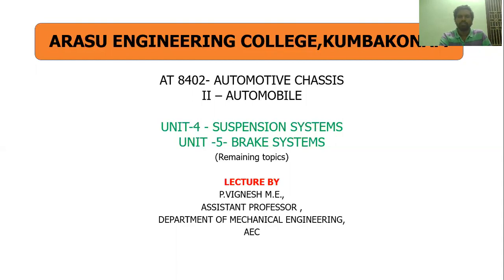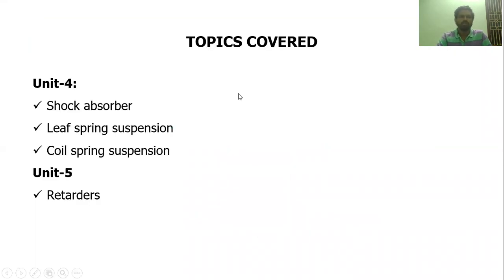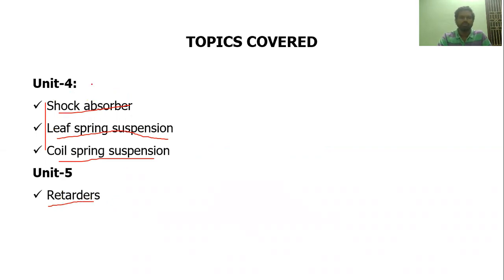We will go directly to the topics. From Unit 4 we have three topics left: shock absorber, leaf spring suspension, and coil spring suspension. In Unit 5, the only thing we have to cover is retarders. We will first see Unit 4 and then move to Unit 5.